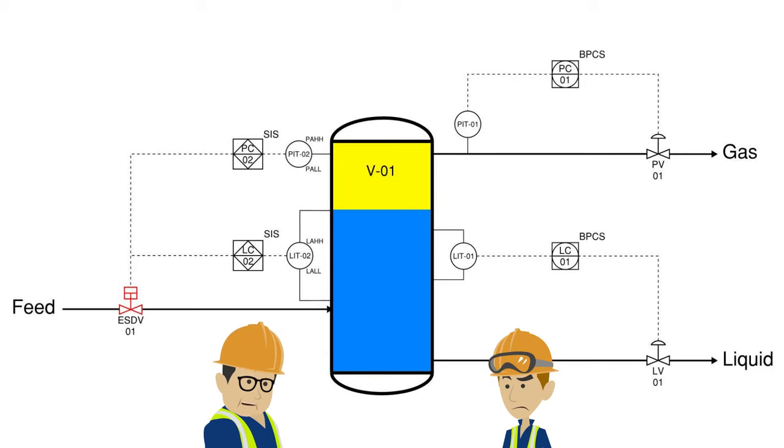If the level in the vessel gets too high, there's a potential to carry liquids over to the compressor downstream on the gas system. This could cause a catastrophic failure in the compressor.